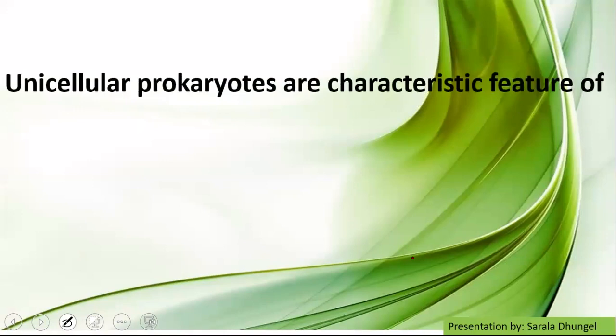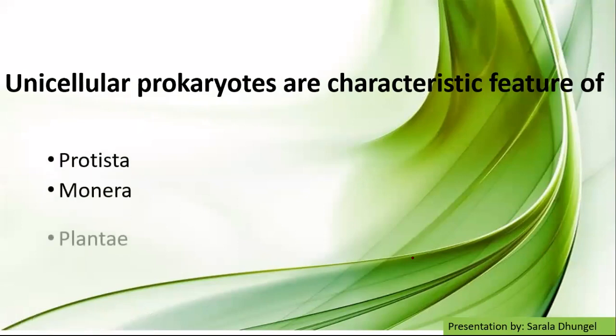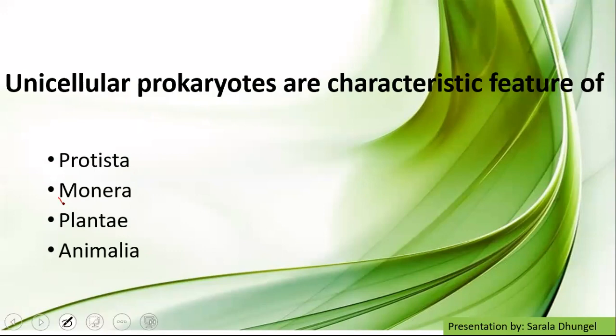So here's an MCQ: Unicellular prokaryotes are characteristics features of which kingdom? The options are: (A) Protista, (B) Monera, (C) Plantae, (D) Animalia. Pause the video for a while and think of the correct answer. The correct answer is Monera — only monerans are prokaryotes in the five kingdom classification.